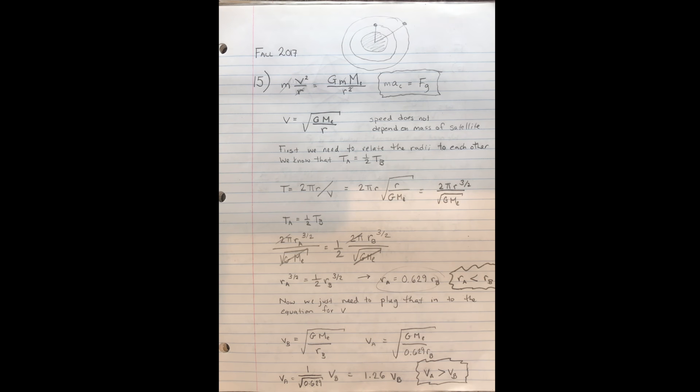This is the solution to the Fall 2017 exam number two, problem 15. We're told that two satellites A and B both have circular orbits. Satellite A has twice the mass of satellite B and it completes one orbit in half of the time as satellite B. Compare the speeds of the satellites relative to the Earth and the radii of their orbits.